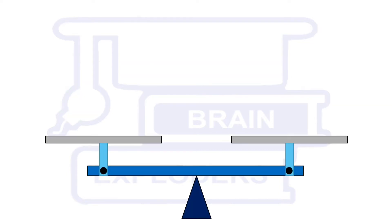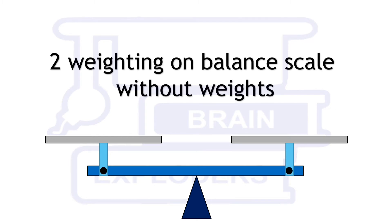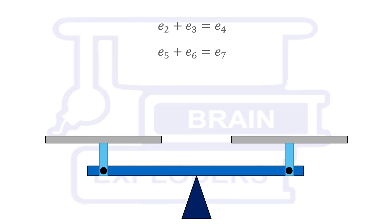To find this elephant we have a balanced scale without weights on which we can perform only two weighings. If no elephant has lost its mass then e2 plus e3 must be equal to e4 and e5 plus e6 must be equal to e7.